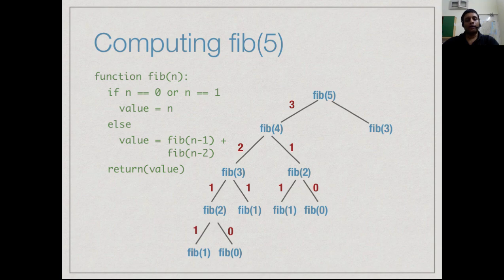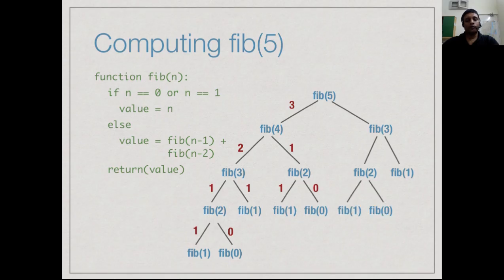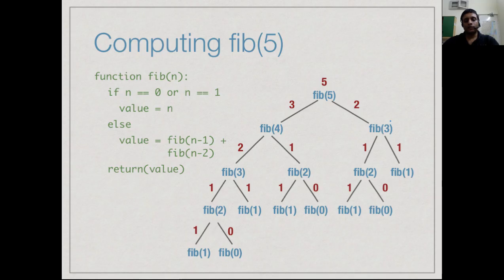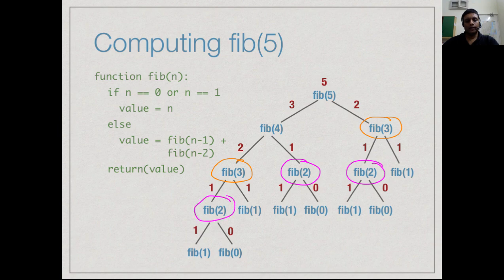Now I go back and compute Fibonacci of 3 yet again — this entire tree repeats. Fibonacci of 3 calls 2 and 1; Fibonacci of 2 calls 1 and 0; those return the base case, giving a value for 2; then 1 returns the base case, giving a value for 3. Finally, after all this, I get the value for Fibonacci of 5. So the problem is that functions like Fibonacci of 3 have been computed twice in full, and Fibonacci of 2 has been computed 3 times.